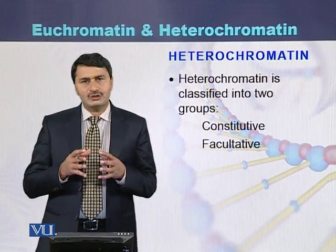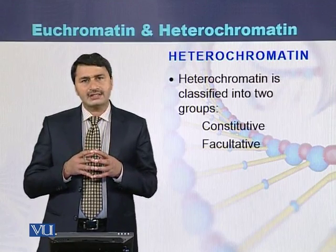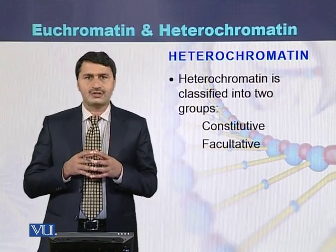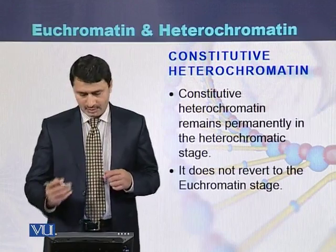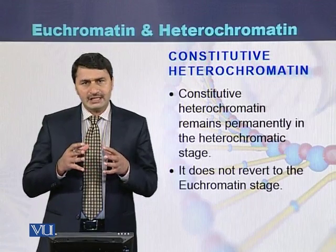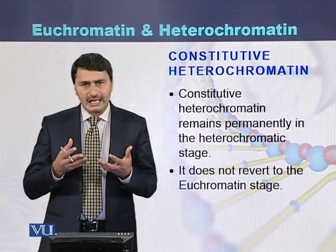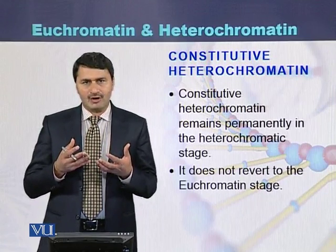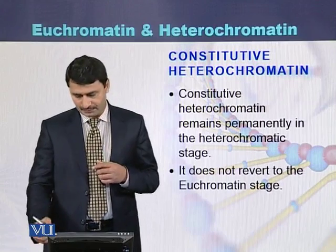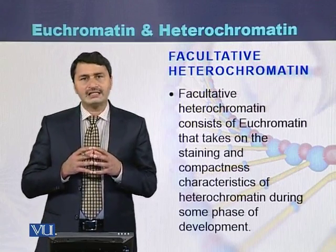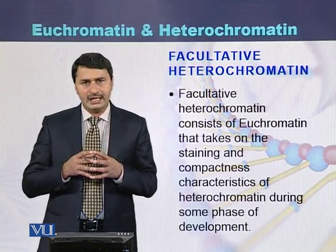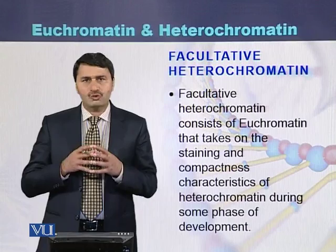Heterochromatin is divided into two types: constitutive heterochromatin and facultative heterochromatin. Constitutive heterochromatin is the chromatin that remains in its phase throughout the life of an organism and does not revert back into U-chromatin. Facultative heterochromatin, on the other hand, can revert back into the U-chromatin phase.